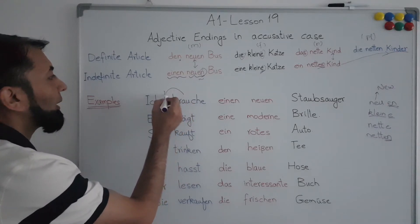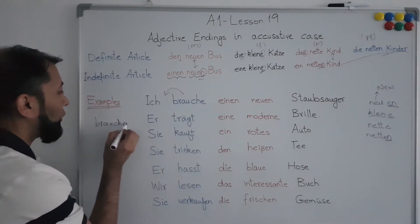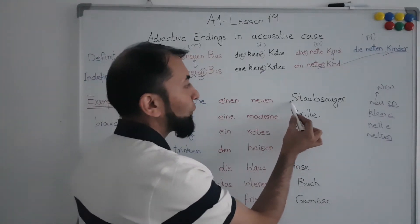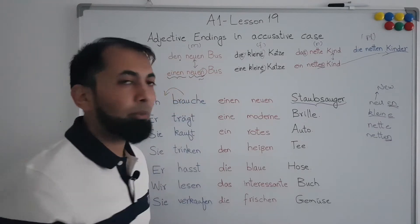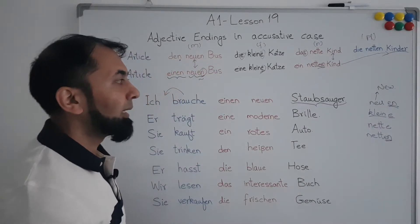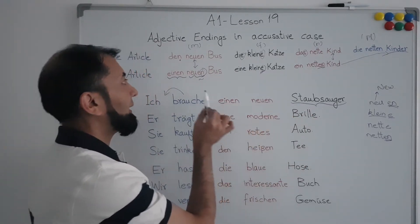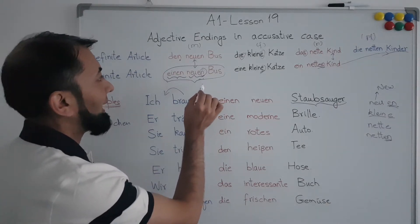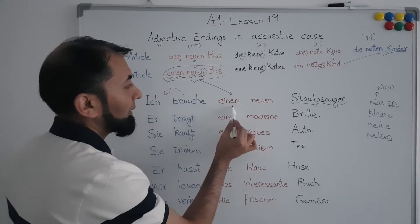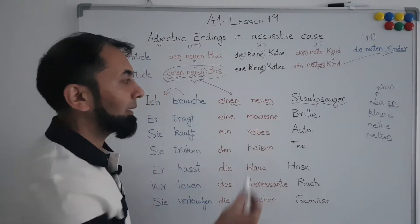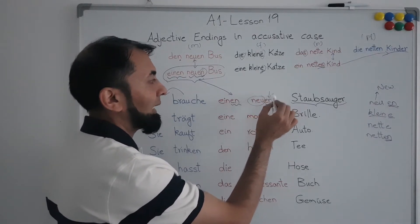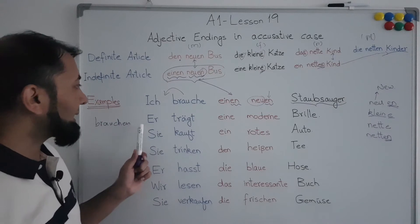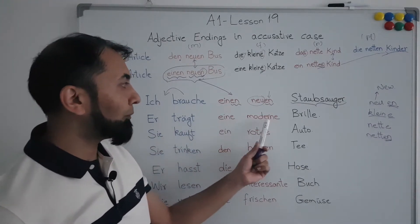Now let's look at some examples. The first example is 'I need a new vacuum cleaner'. The verb 'brauchen' means 'to need' or 'to require'; conjugated with 'ich' it becomes 'brauche'. The noun 'Staubsauger' is masculine, so we use an indefinite article and refer to the masculine section of the table. For a masculine noun with an indefinite article in the accusative, the adjective receives '-en' at the end: 'einen neuen Staubsauger'.